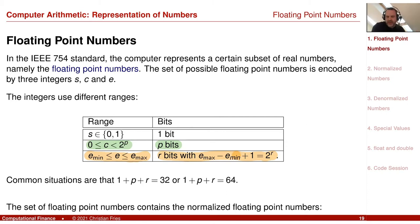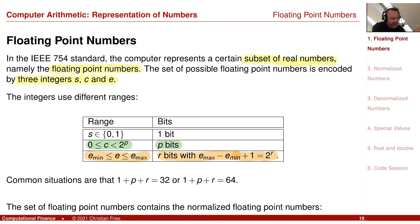How do we use these three integers S, C, and E to encode a subset of the real numbers? The computer represents a certain subset of the real numbers using these three integer values. What you will see now is that this subset of floating-point numbers is described by three different definitions, and they all describe disjoint parts of the set.